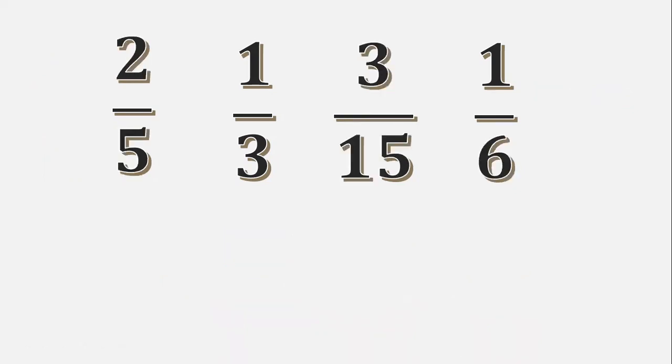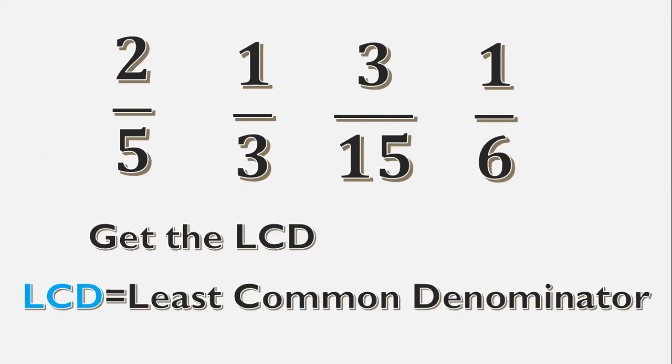Let's give another example. We have 2/5, 1/3, 3/15, 1/6. Same process. Get the LCD. LCD is the least common denominator. We have the denominators: 5, 3, 15, and 6. Same process. Multiples of 5: we have 5, 10, 15, 20, 25, 30, and so on.